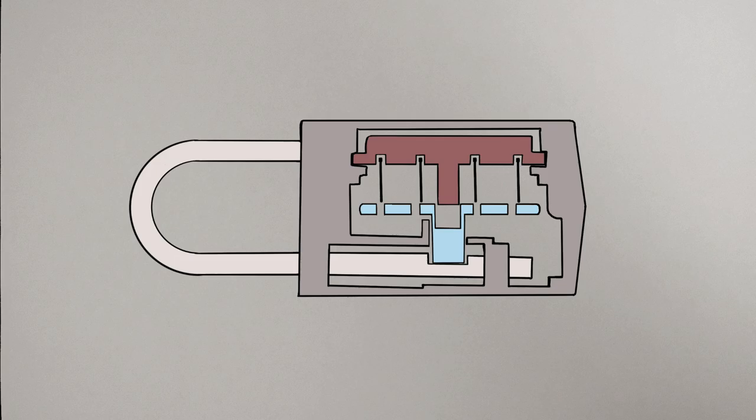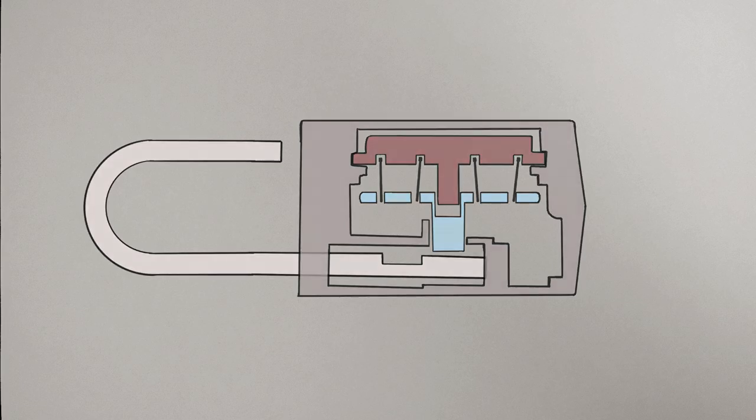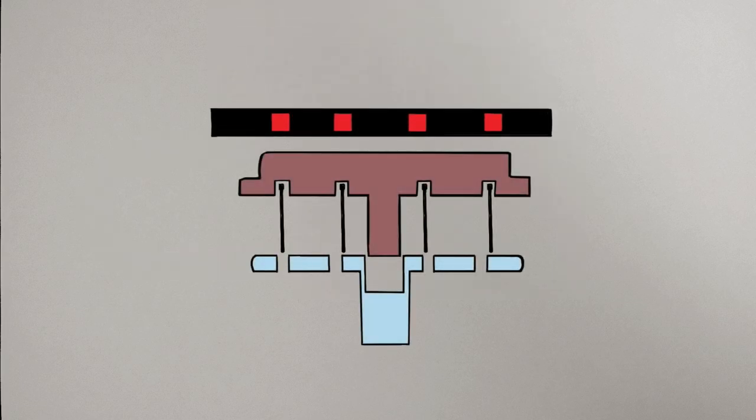This bar prevents the shackle from being released unless the pegs are aligned with the holes allowing it to move upwards, and this will only happen when a specific set of magnetic fields comes into play, causing the pegs to move until they hover immediately over each of those specific points.